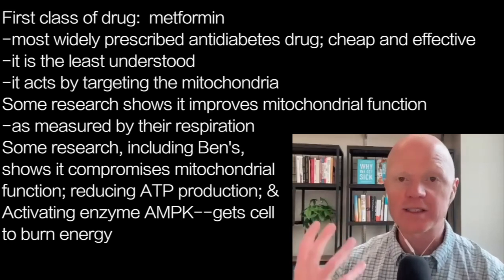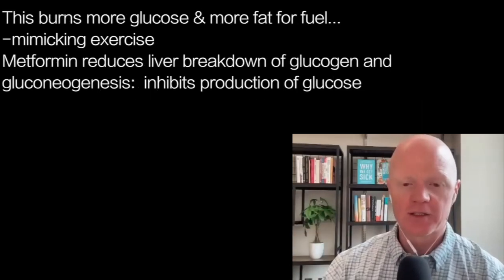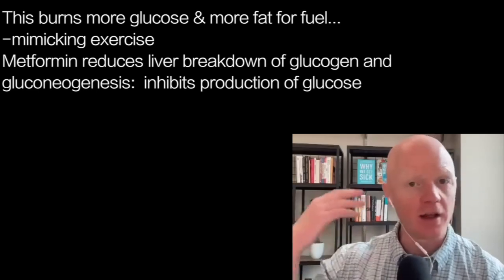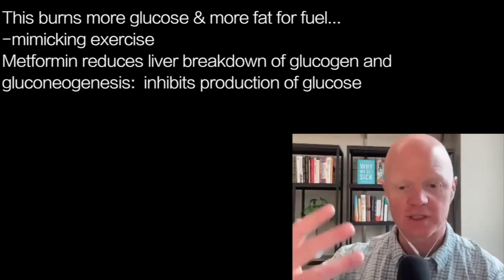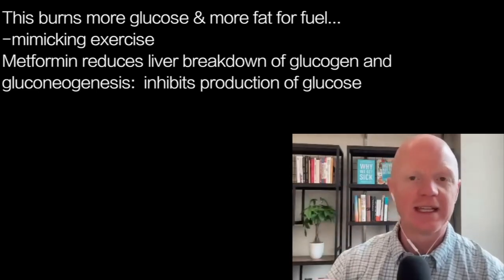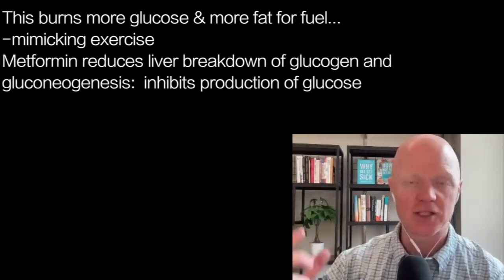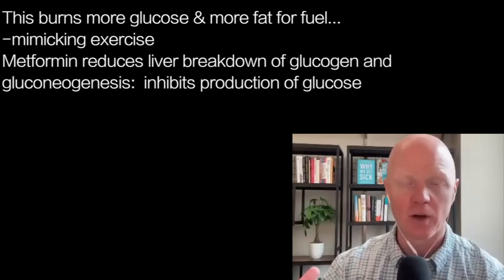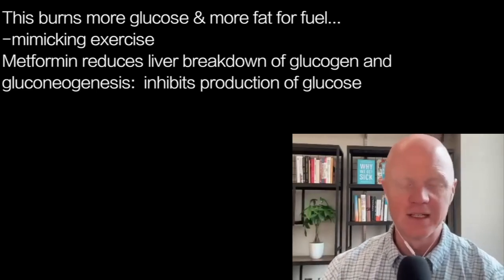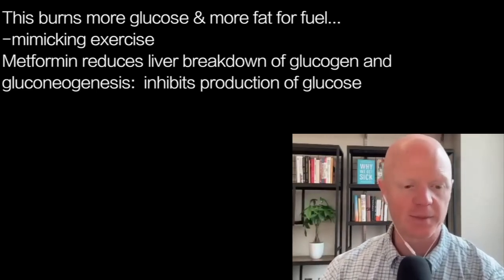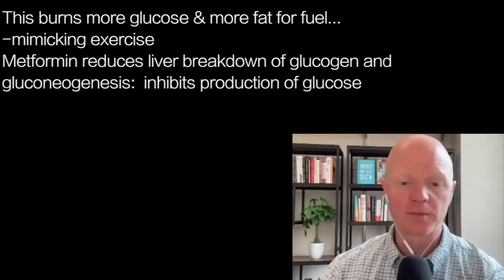AMPK is an ultimate catabolic master switch — it wants the cell to start burning energy. So if AMPK is activated, glycolysis goes up so the cell starts using more glucose, and beta-oxidation of fats goes up so you start burning more fat for fuel. Metformin ends up having all of these generally favorable metabolic outcomes.